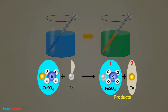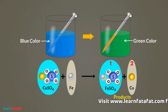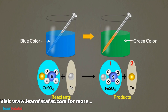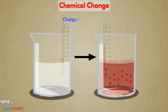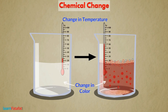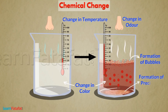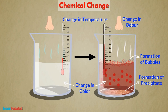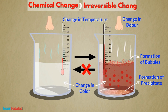These products have different composition as well as different properties compared to the reactants. In addition to change in composition, a chemical change may also involve change in temperature, colour, odour, formation of bubbles, or formation of a solid material called a precipitate. The change is permanent and cannot be reversed. Thus, chemical change is an irreversible change.